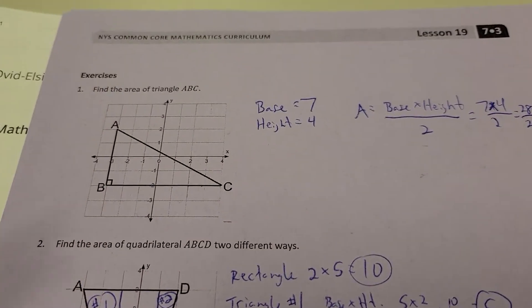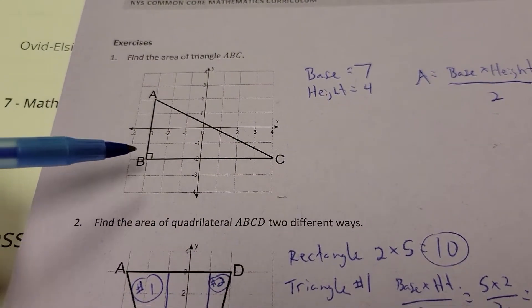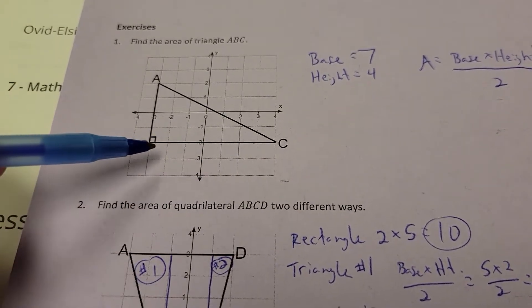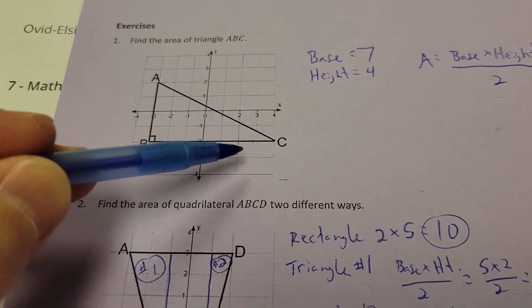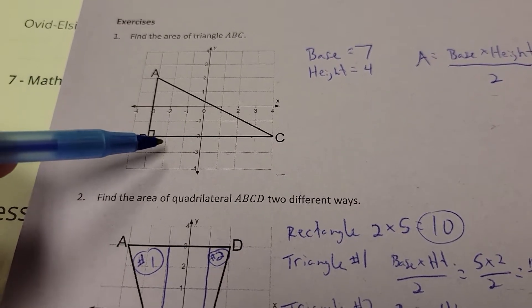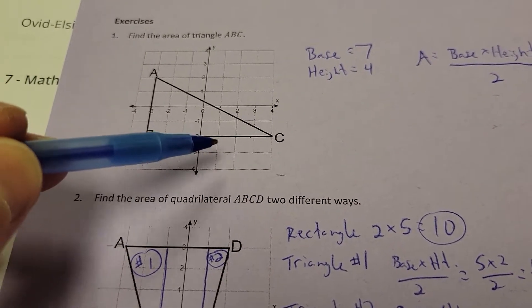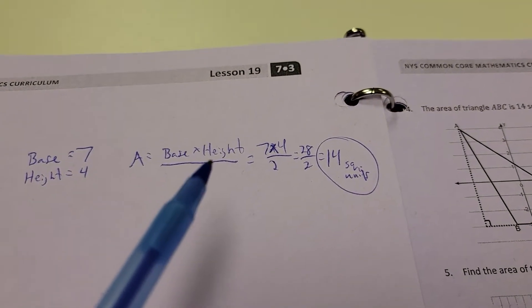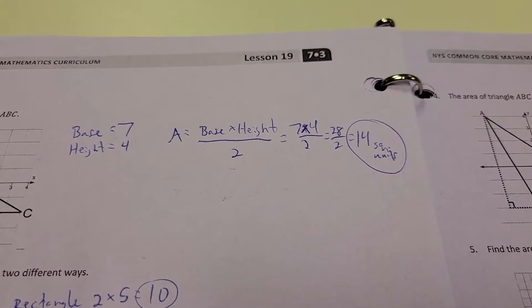Alright. Another example for the area of a triangle. Notice how they have a little box here from 90 degrees. I have these two are my important parts for finding the area. Here's my base. Here's my height. My base is going to be 7 from left to right, and my height is going to be 4. So base times height divided by 2. 7 times 4 divided by 2 gives me 14 square units.